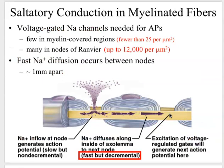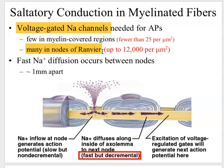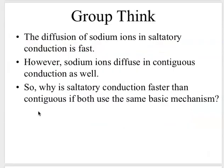Looking at a cross-section, you can see the axon with myelinated regions. At the nodes of Ranvier, there are lots and lots of voltage-gated sodium channels, while in the myelinated regions there are very few. This concentration of sodium channels at the nodes allows for really fast diffusion of sodium, enabling the action potential to propagate rapidly down the membrane.